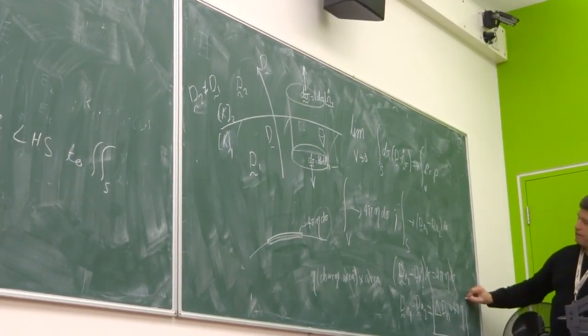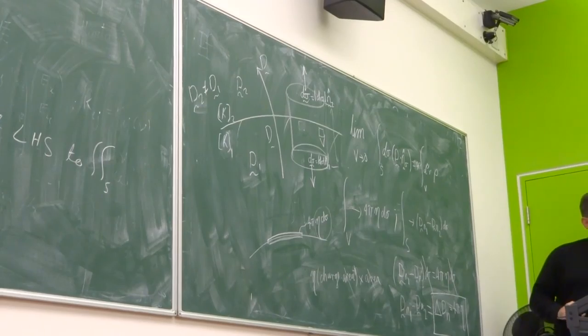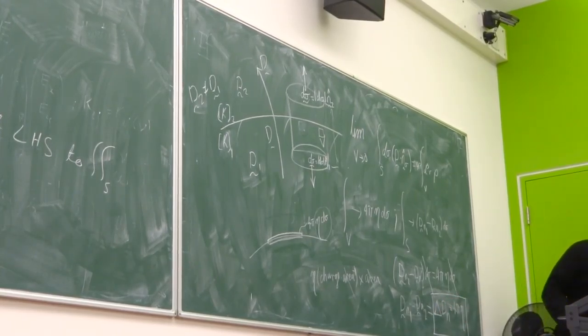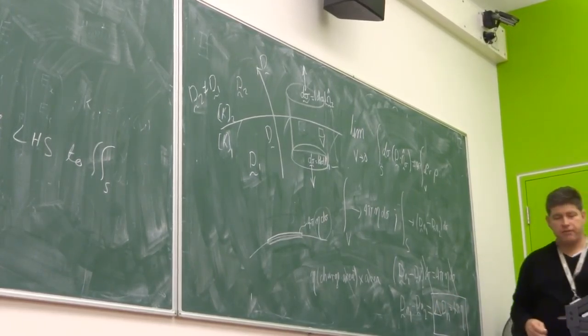Delta D normal is equal to 4 pi eta. That is the equation of continuity for the electric displacement vector across a boundary. And it's our first result that we've got, the other three to go now.